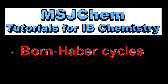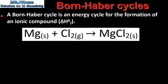This is MSJChem. In this video I'll be looking at Born-Haber Cycles. A Born-Haber Cycle is an energy cycle for the formation of an ionic compound. Here we have an equation for the formation of one mole of solid magnesium chloride from its elements in the standard states under standard conditions.